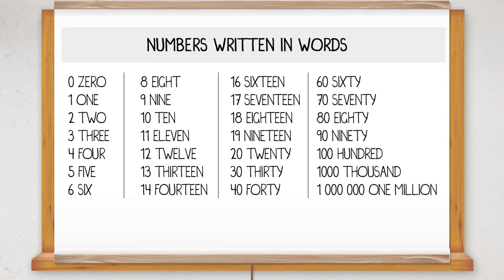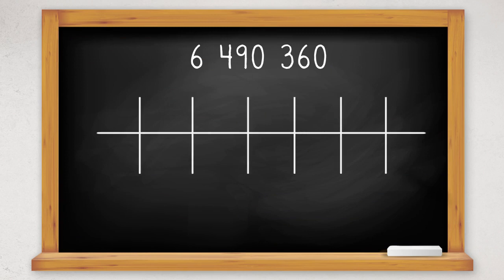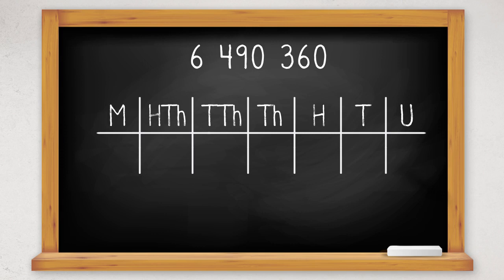To write the number 6,490,360 in words, use place value headings to help you find the value of each digit in the number. So we have place value headings: units, tens, hundreds, thousands, ten thousands, hundred thousands, and millions.